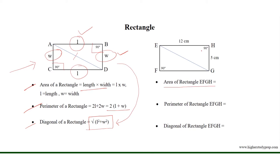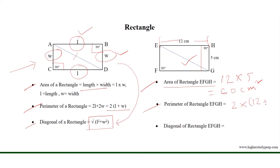The area of rectangle EFGH equals 12 times 5, which equals 60 cm², because the length equals 12 cm and the width equals 5 cm. The perimeter equals 2 times (12 + 5), which results in 34 cm. The diagonal equals the square root of (12² + 5²), which results in 13 cm.